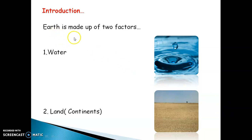We learned that our Earth is made up of two factors: water and land. When I say water, it means all the water bodies in the world, for example, oceans, seas, rivers, lakes, etc. These will come under the water part. Land means continent — a huge piece of land is called a continent. On the continents, various countries are located. Basically, our world is made of only two parts: water and land.